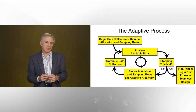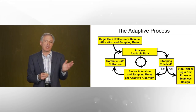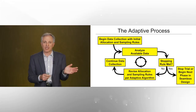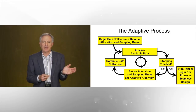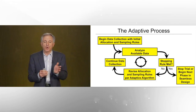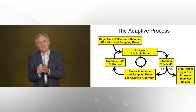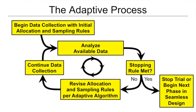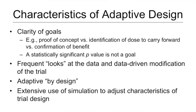One of the pre-specified stopping rules is always that we have reached the maximum allowable sample size for the trial. The stopping rule may dictate that the trial stops entirely, or it may refer simply to stopping a phase or stage of the trial — for example, in a seamless phase 2-3 design.